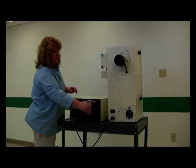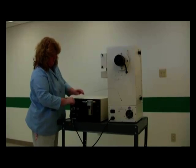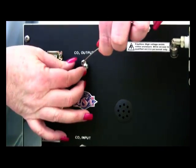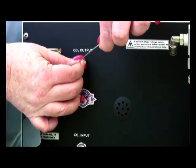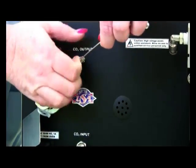Next, take the CO2 line that comes from the back of the oven and connect it to the CO2 output. Use a 5-16 inch wrench to tighten it to prevent leaks.